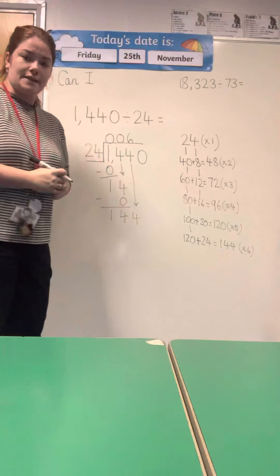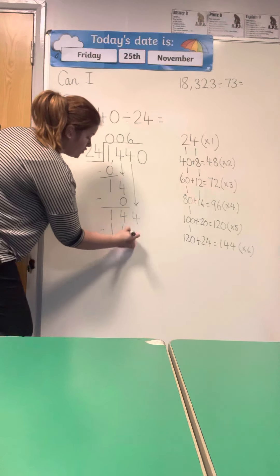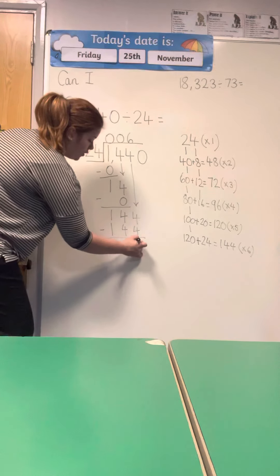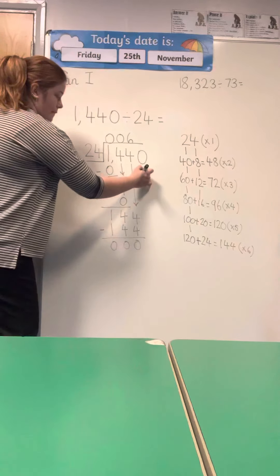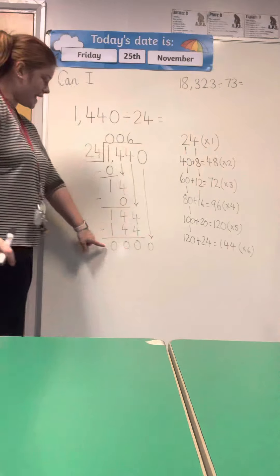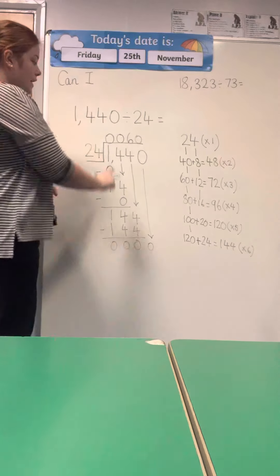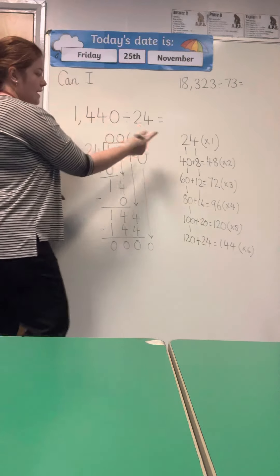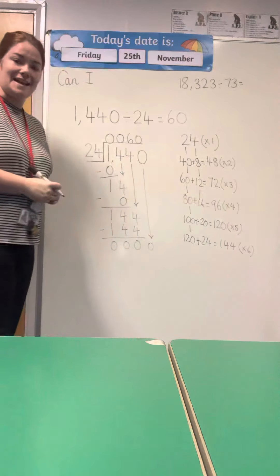So I'm going to pop a 6 up here, go to my subtract, which is 144. 4 take away 4 is 0, 0, 1 take away 1. I then bring down my final digit, and I've got nothing here, which means I pop a 0 here. So I can see that 1,440 divided by 24 gives me 60.